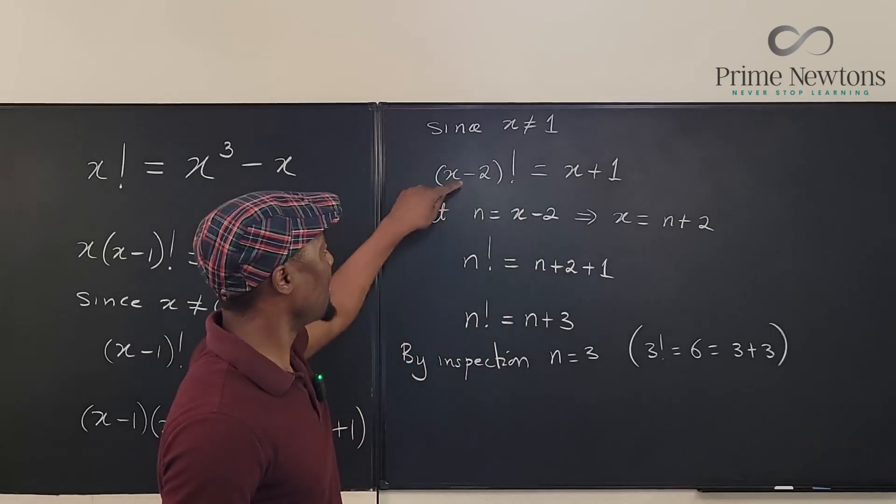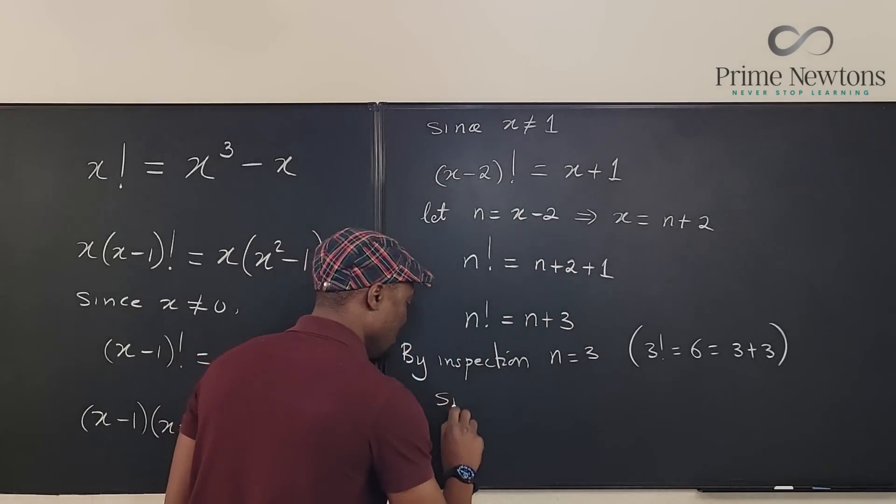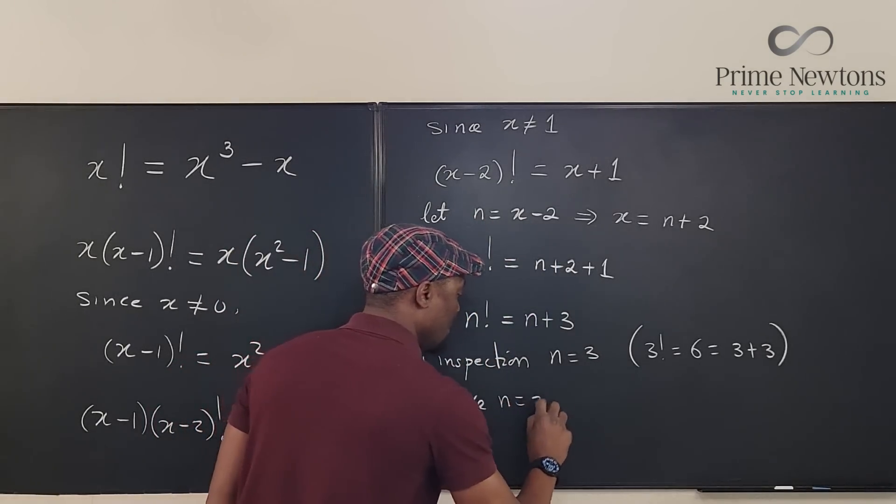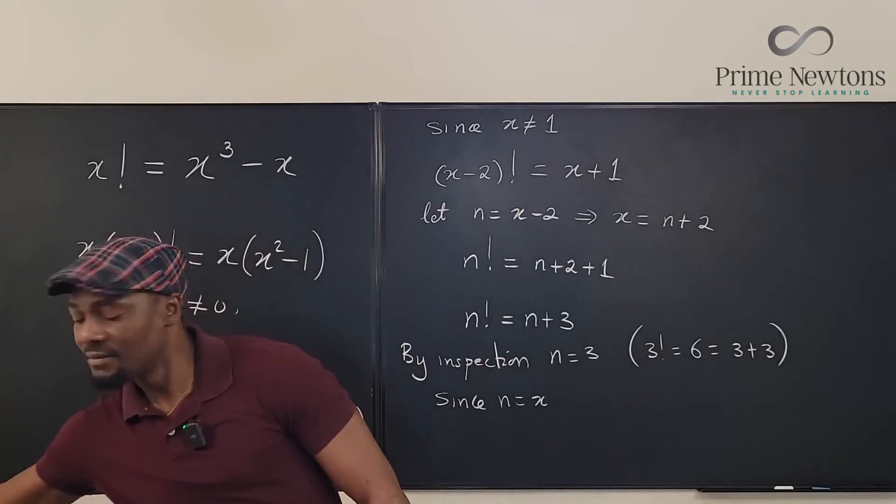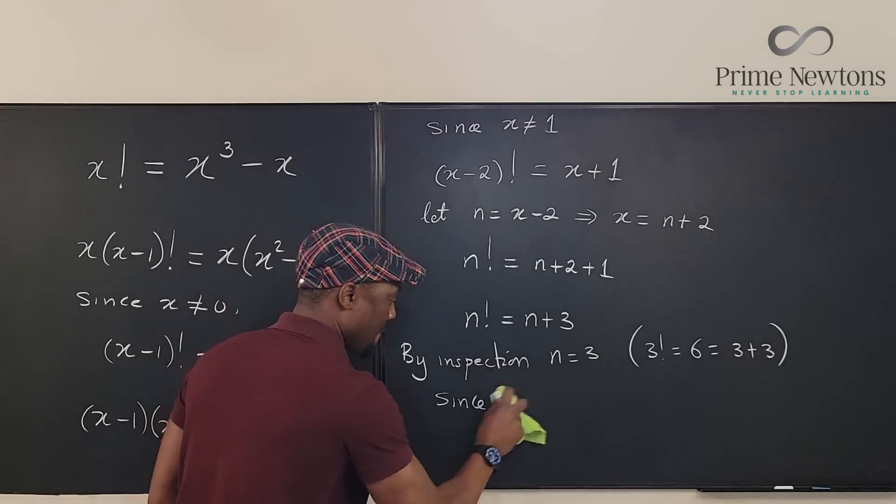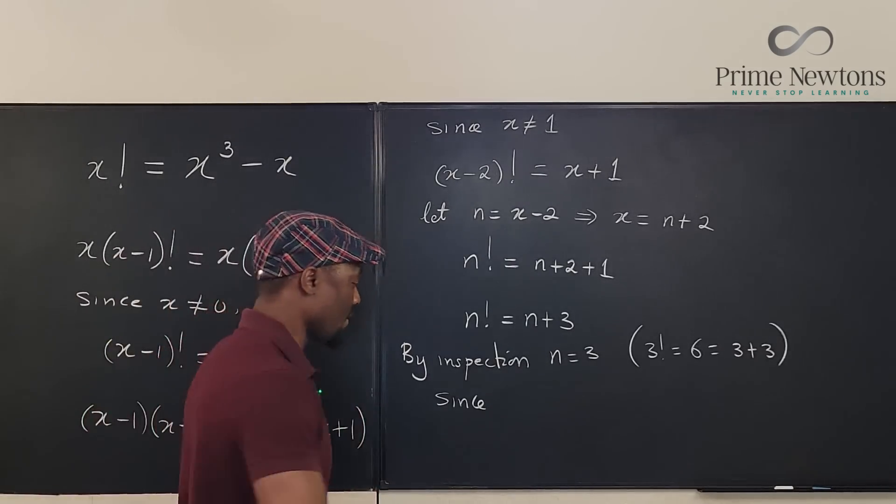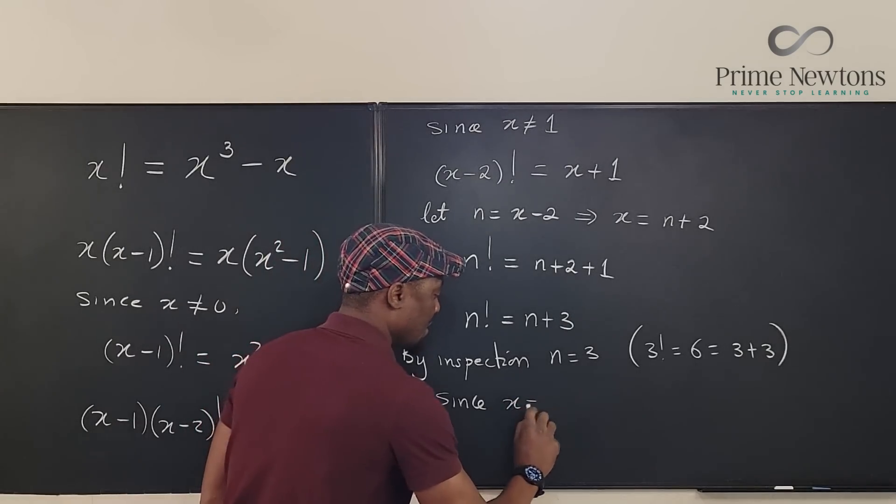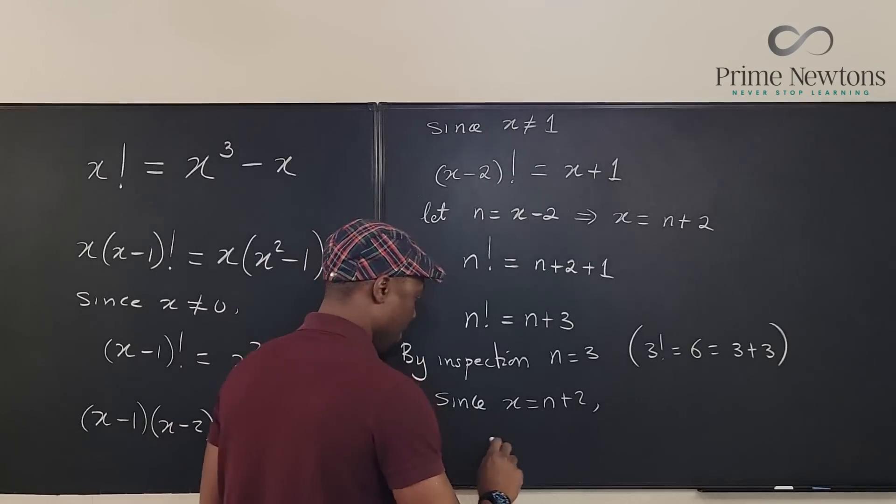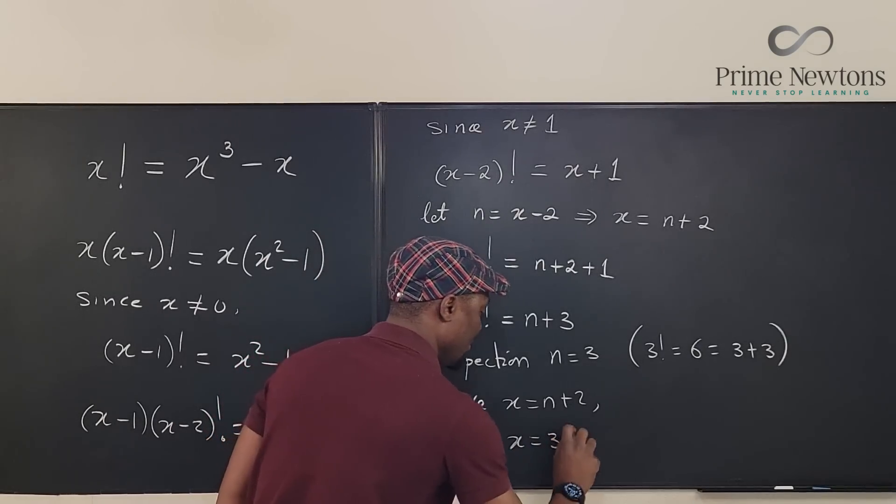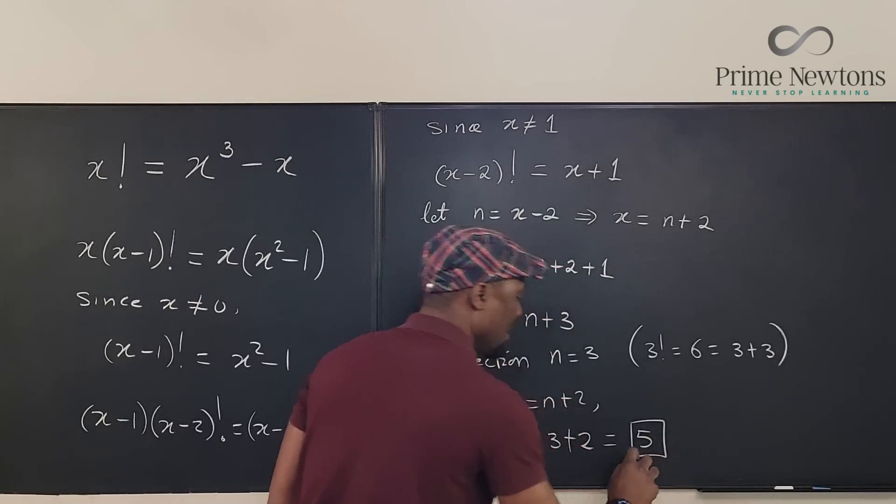Let's go back and get what x is, because that's where we started. We said n is (x-2). Since x equals (n+2), we have x will be equal to three plus two, which is equal to five. There we go.